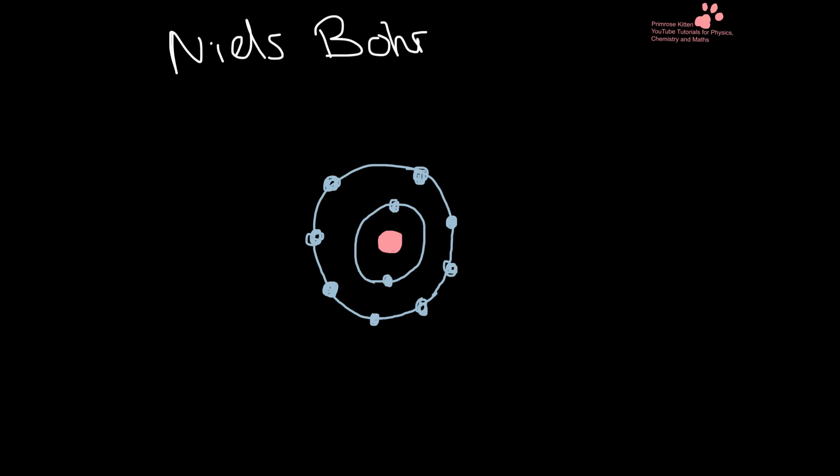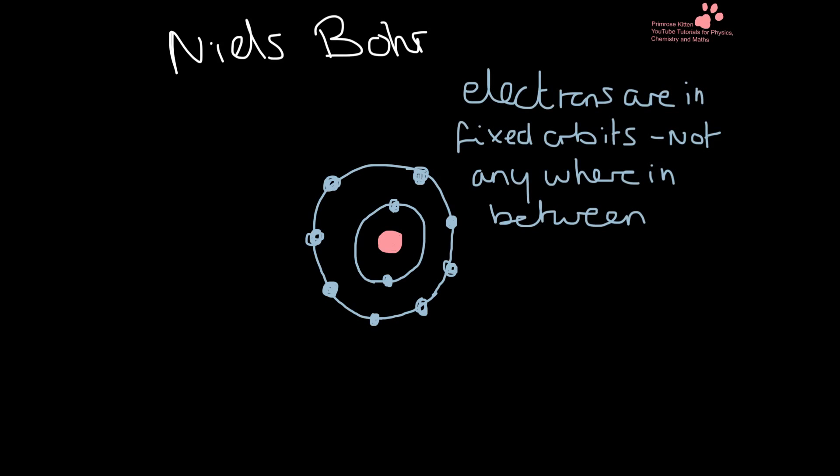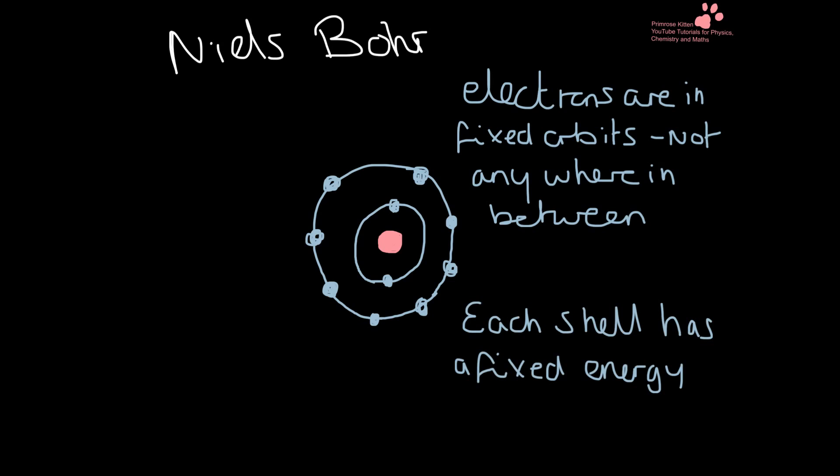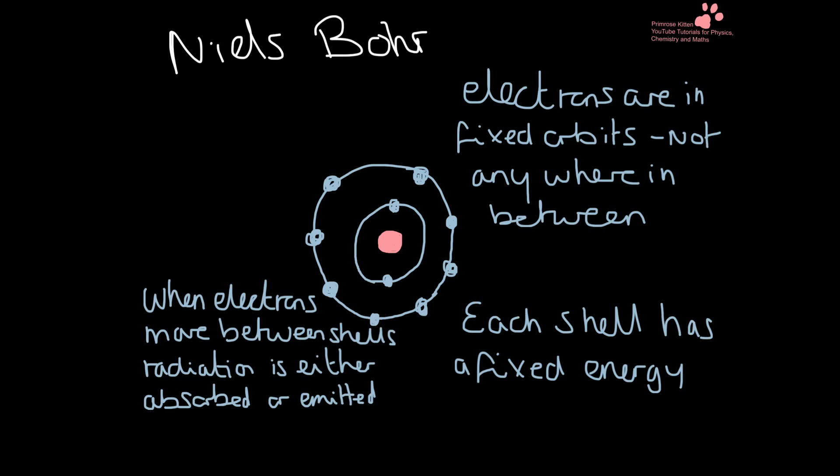Niels Bohr also worked with Rutherford at the University of Manchester. His model is the one you are very familiar with from GCSE — the nucleus in the middle with electrons in shells around the outside. This model is based on a few rules: electrons live in fixed orbitals and do not go anywhere in between; they are very fixed in their positions. Each shell has a very fixed and definite energy level.